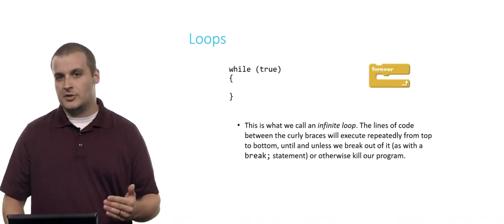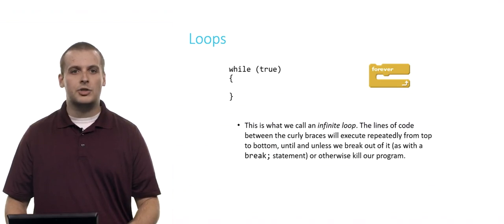First is forever from Scratch, which compares to while true. This is what we call an infinite loop. The lines of code between the curly braces, much like the puzzle pieces that fit inside the C of the forever block, will execute repeatedly from top to bottom over and over forever. After all, if you recall from our discussion of Boolean expressions, true is always true. So if we're doing something so long as true is true, which seems a little silly, true is always true, so it'll always run.